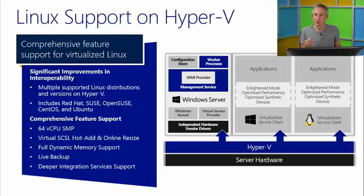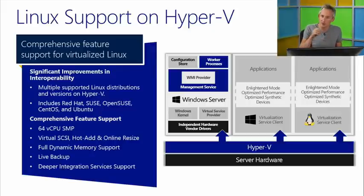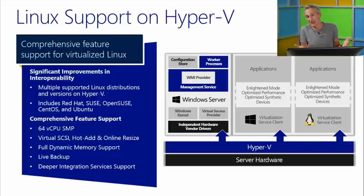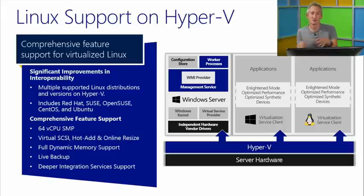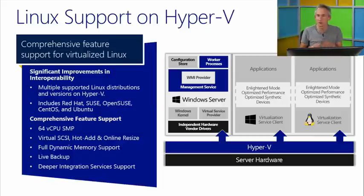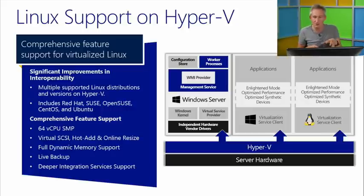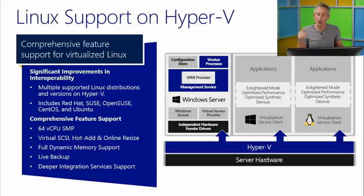Full dynamic memory support is coming in 2012 R2 — a key ask of the Linux community — allowing you to scale up and scale down memory for a Linux VM the same way as for Windows, increasing density using dynamic memory for both Linux and Windows workloads. A key capability is live backup: Linux doesn't have VSS in the same way Windows does, so with Windows Server 2012 R2 we've built a backup engine enabling snapshot and backup of Linux VMs without needing to take them offline. We're achieving parity between enlightened Windows and Linux clients: optimized devices, optimized drivers, optimized performance on Hyper-V.